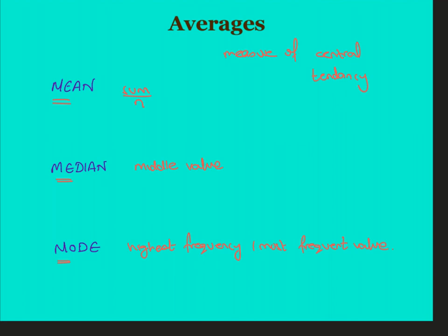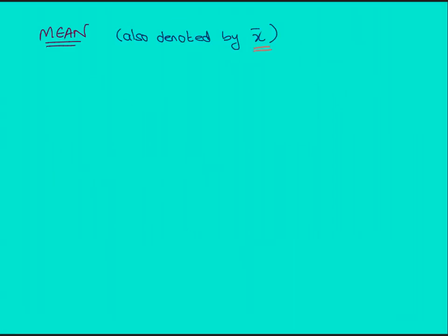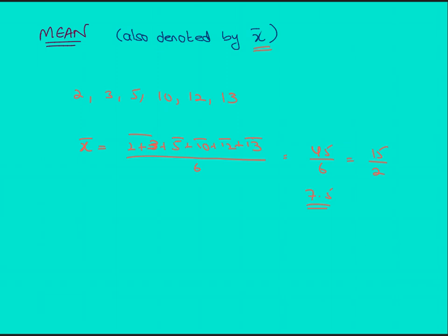Let's begin with the mean. The mean of a set is denoted by x-bar. You will have a data set — for instance, 2, 3, 5, 10, 12, and 13. These are six data values. To find the mean, you find the sum: 2 plus 3 plus 5 plus 10 plus 12 plus 13, divided by 6. That sum is 45, so the average is 45 upon 6, which simplifies to 7.5. This is the mean of this set.